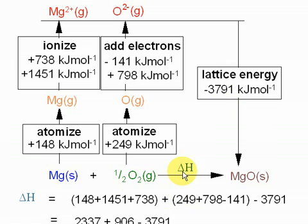To work out delta H, it's a matter of going up this arrow and down this arrow here. So, plus 148, plus 1451, and the 738 gets you from magnesium solid to magnesium 2 plus in the gas phase. This bracket here is the oxygen starting from the molecule: 249, 798, and the minus 141 to get you to O2 minus gas. And the minus 3791 is the lattice energy.